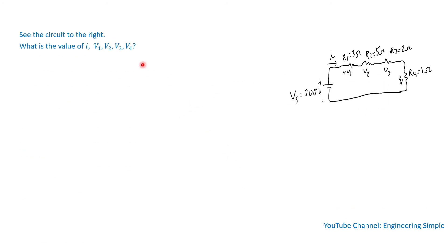Looking at this example with the circuit to the right: the voltage is 200 volts, with current flowing through a series circuit where R1 is 3 ohms, R2 is 5 ohms, R3 is 2 ohms, and R4 is 1 ohm. The question is: what is the current, and what are V1, V2, V3, and V4?